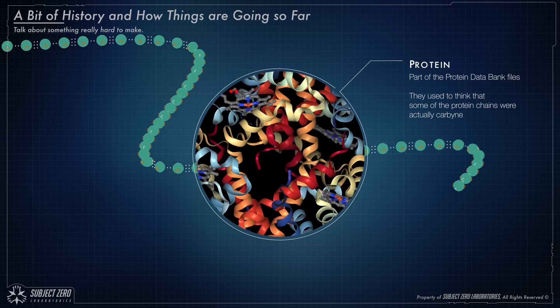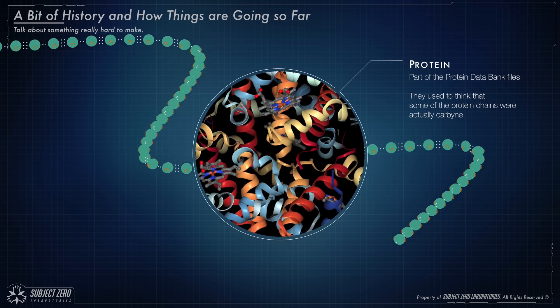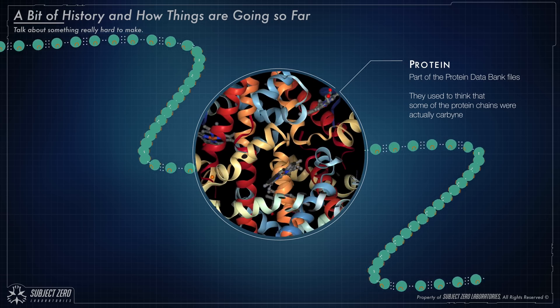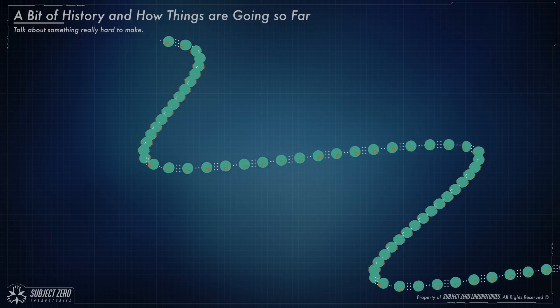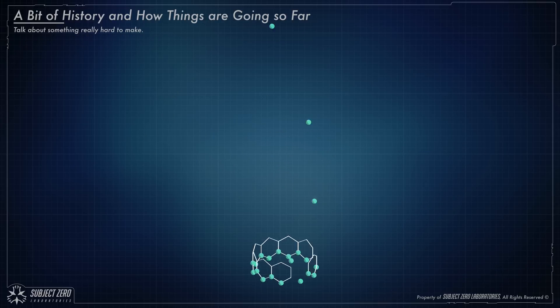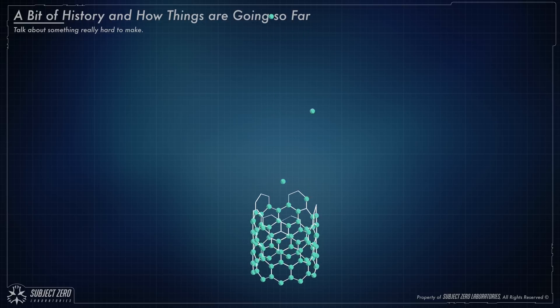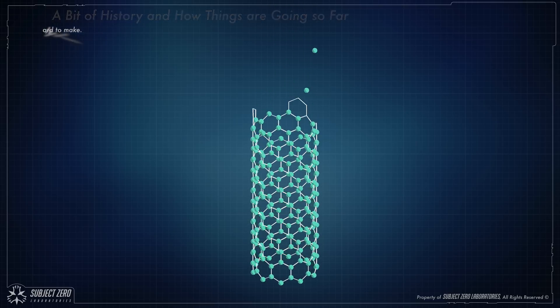However, recently it was actually done in a lab. And when I say recently, I'm talking about 2016. That is how hard it is to make this stuff. And to achieve this, they used nanotubes to conduct the process, which is another carbon structure that is also hard to make, so you kind of get the problem.